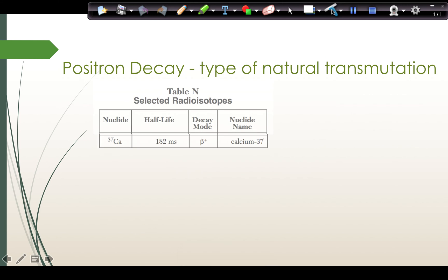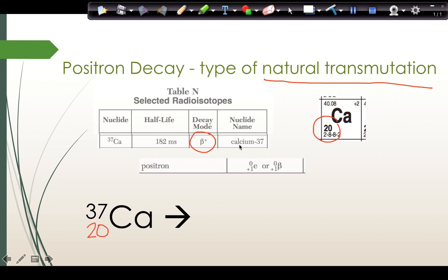For positron decay, we would see on table N this B plus. Calcium 37 undergoes positron decay. So that means that calcium 37 is by itself before the arrow because this is a type of natural transmutation. I look up the atomic number for calcium to fit it in. I find on table O the notation for a positron, fill that in as one of my products.